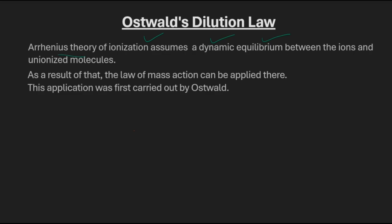Arrhenius theory of ionization assumes a dynamic equilibrium between the ions and the unionized molecules. Suppose we have an electrolyte AB and we put it in water or any other polar solvent — it gets broken to give A⁺ and B⁻. These are the ionized form and AB is the molecular form. These ions will also recombine to give this electrolyte again, meaning there is both a forward and backward reaction. At a particular condition, the rate of forward reaction and the backward reaction are the same — that is called the dynamic equilibrium condition.